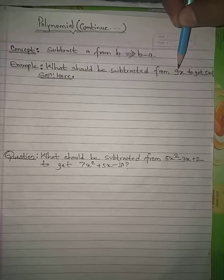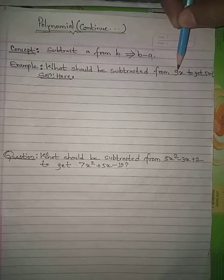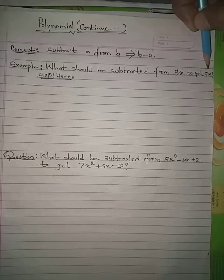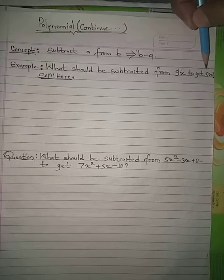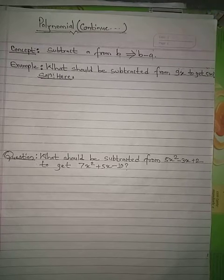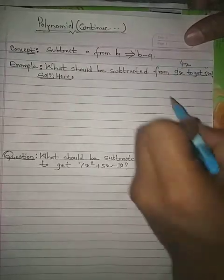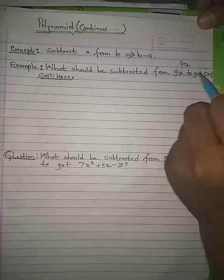You already have 9 apples — how many apples can you subtract so that 5 apples are left? Yes, you are right: 4 apples, because if you take out 4 apples from 9 apples you will get 5 apples.